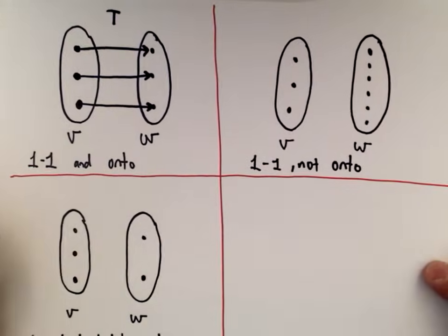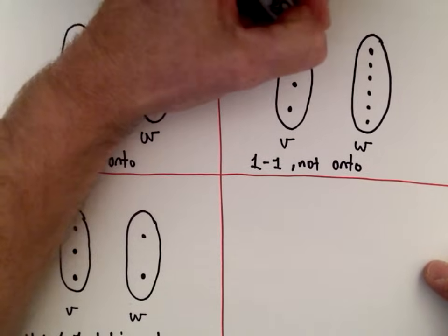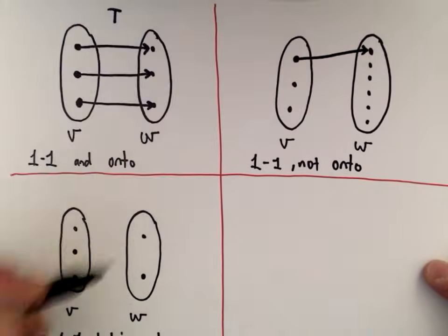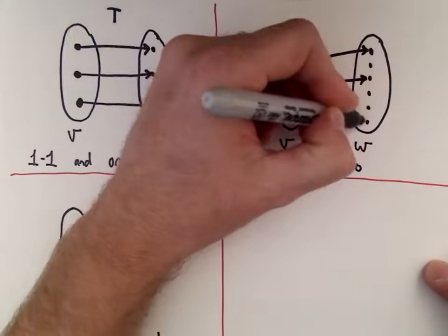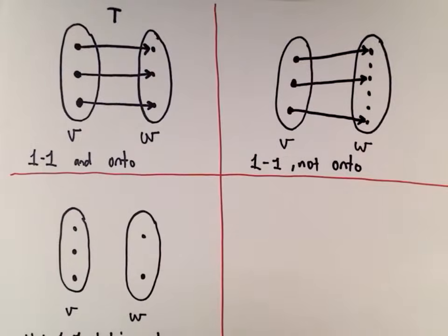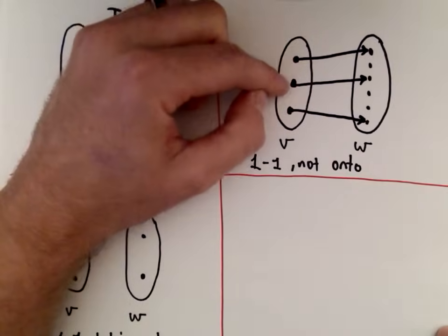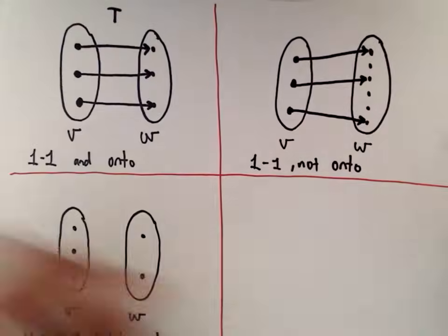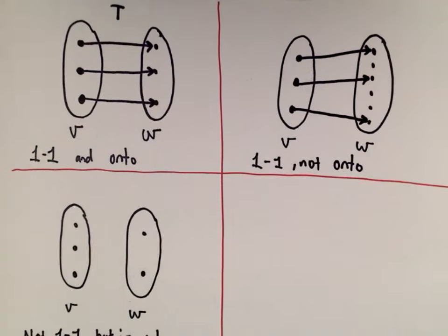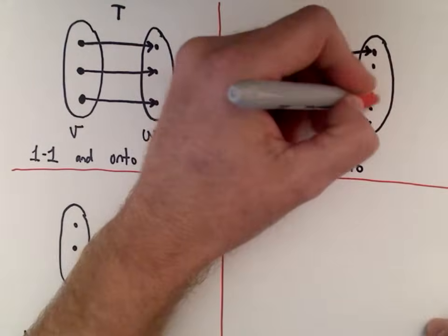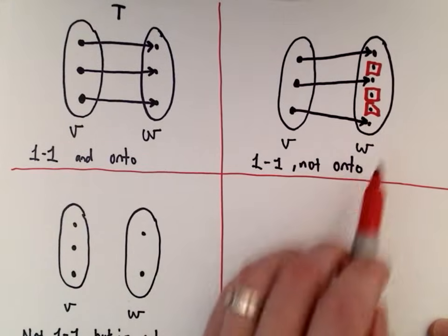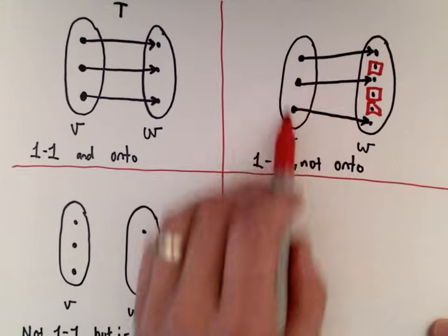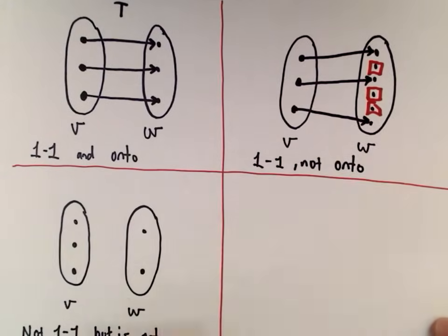In the next example, the first vector maps to the first element, the second maps to another element, and the third maps to another one. This is still one-to-one because distinct elements get mapped to distinct outputs. However, it's not onto, because there are elements in W that nothing is getting mapped to — not everything in W is being hit.